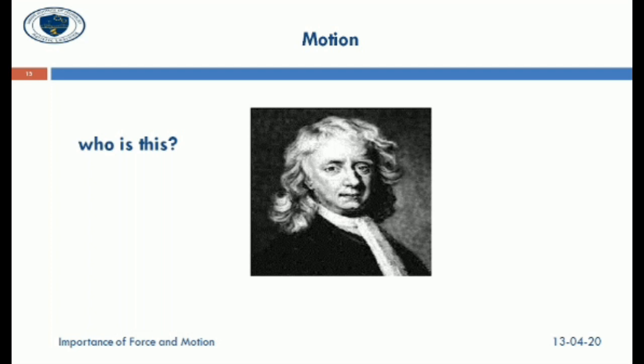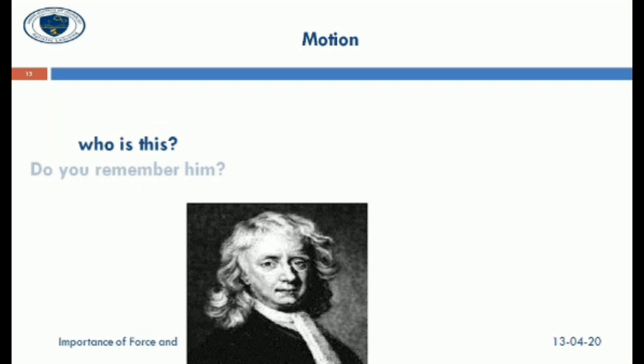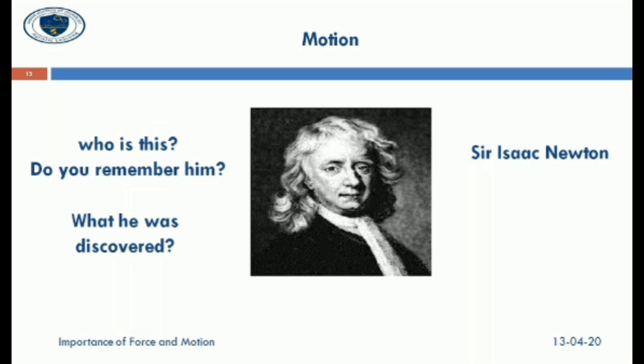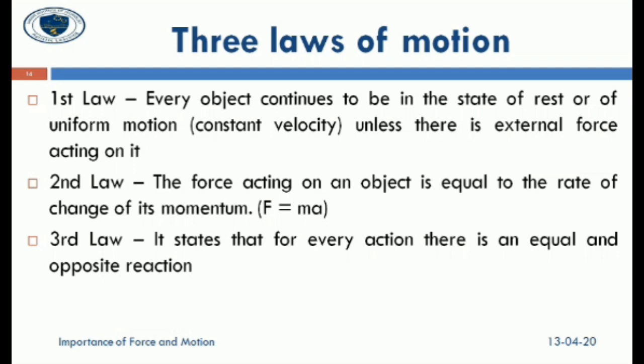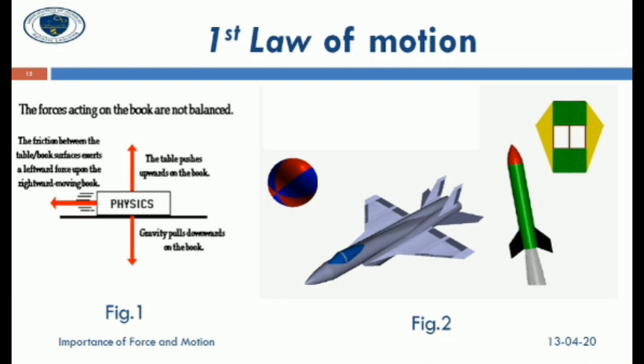Next, we go to motion. He is Sir Isaac Newton. He discovered the law of gravity and three laws of motion. Newton's first law: every object continues to be in the state of rest or uniform motion unless there is an external force acting on it. Second law: the force acting on an object is equal to the rate of change of its momentum. Third law: for every action, there is an equal and opposite reaction. Figures 1 and 2 describe Newton's first law.